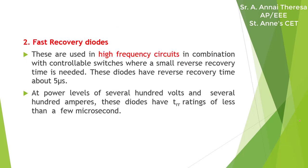The second type is fast recovery diodes, which are used in high frequency circuits in combination with controllable switches. The recovery time is very fast — in the range of 5 microseconds. At power levels of several hundred volts and several hundred amperes, these diodes have TRR ratings of less than a few microseconds, which is why they are called fast recovery diodes.